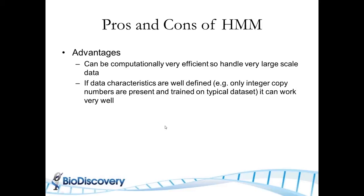So what are the advantages and disadvantages of HMMs? The big advantage of HMMs are they're computationally quite efficient. They're linear. So the larger the array, it's just a linear step up in computation. So they can work quite well with high density arrays. And if you have well-defined integer copy number that are present in your data and your training set matches what you will use on a daily basis, then they work quite well.